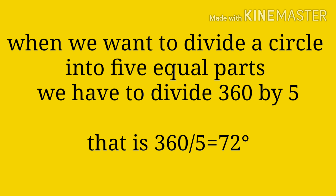One more example. When we want to divide a circle into 5 equal parts, we have to divide 360 by 5. That is, 360 divided by 5 is equal to 72 degrees. So, when we draw a circle, we have to divide the circle with 72 degrees each, and we will get 5 equal parts.